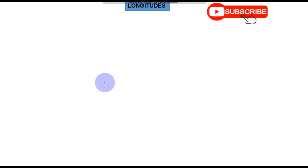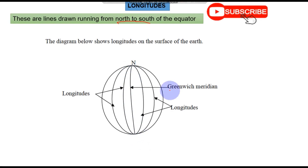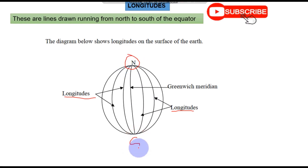Now let us go to longitudes. Longitudes are lines that are running from north to south. As you can see, we have the Greenwich Meridian, and beside it are these other lines — those are longitudes. They are running from north to the south part of the earth's surface. Those are longitudes.